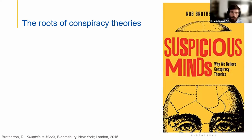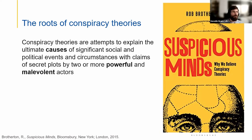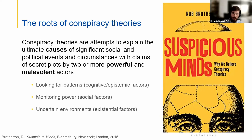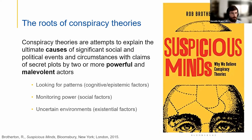There is a popular psychology book by Rob Brotherton that provides a nice introduction to the psychological foundations of people's belief in conspiracy theories. Conspiracy theories are defined as attempts to explain the ultimate causes of significant social and political events with claims of secret plots by two or more powerful and malevolent actors. The words highlighted — secret, powerful, and malevolent — hint towards three main psychological reasons underpinning people's belief in conspiracy theories. As humans, we are prone to look for patterns in things that are happening, which is related to cognitive and epistemic factors.